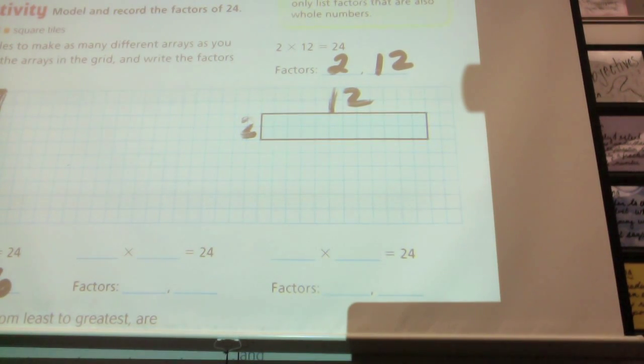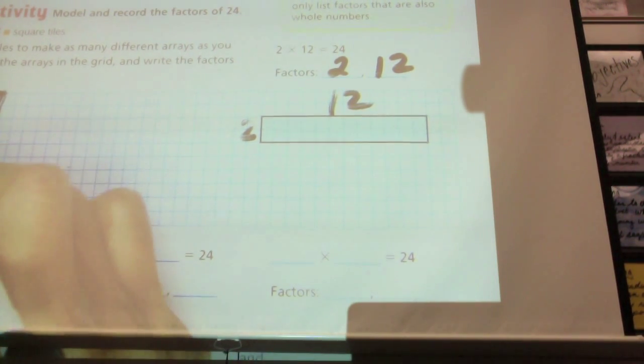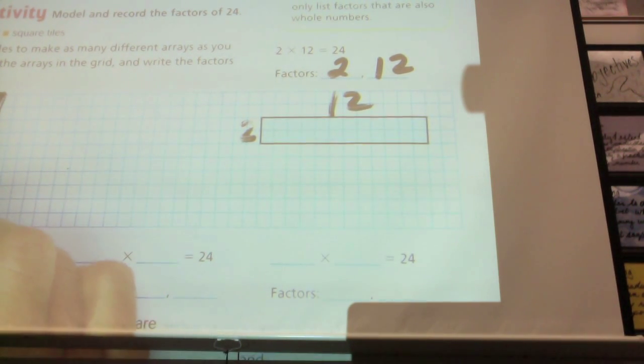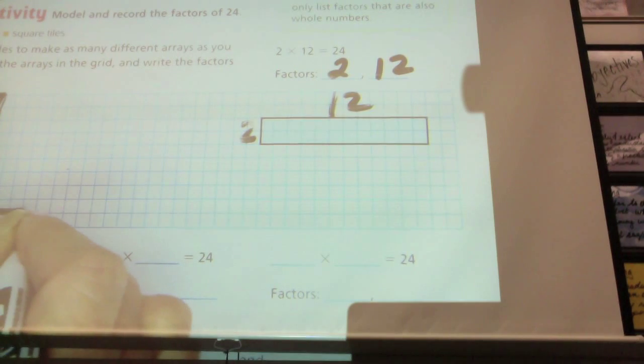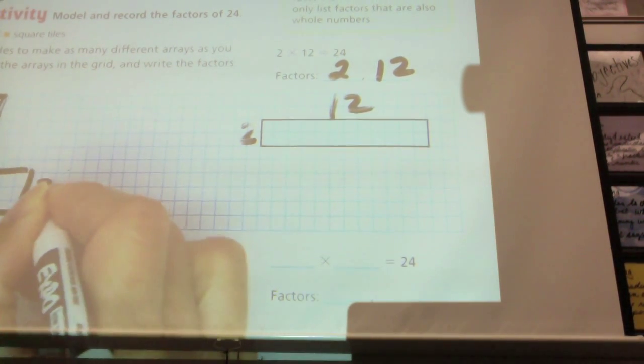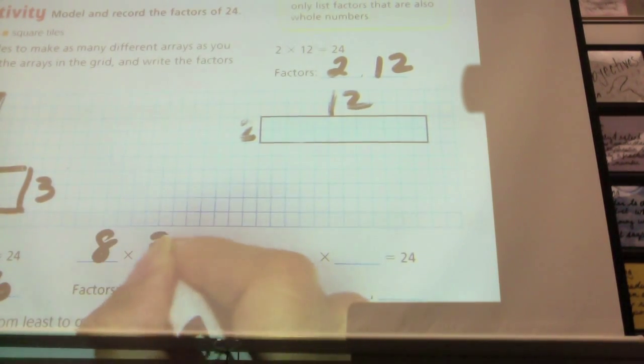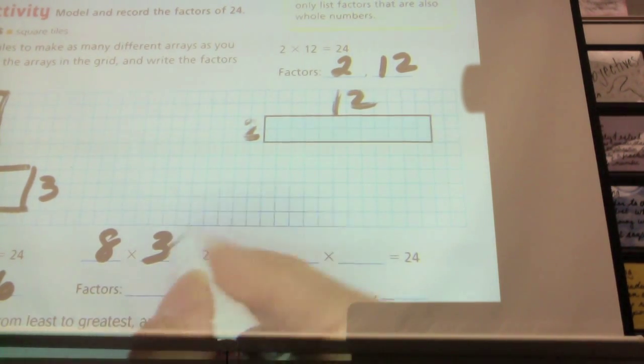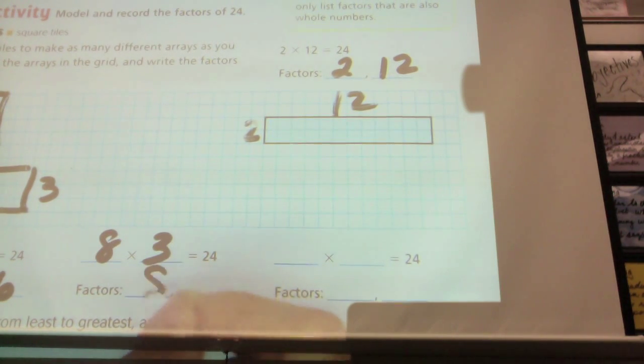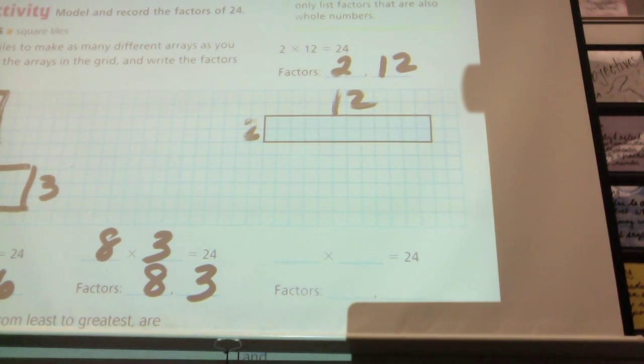What is another array I can draw? Sophia. 8 times 3. 8 times 3. 1, 2, 3, 4, 5, 6, 7, 8. 3 and 8. So, 8 times 3. What are my factors? 8 and 3.